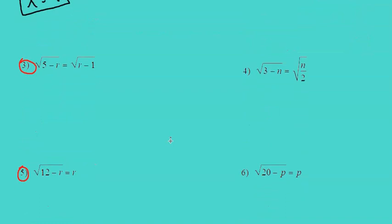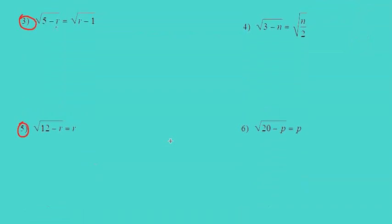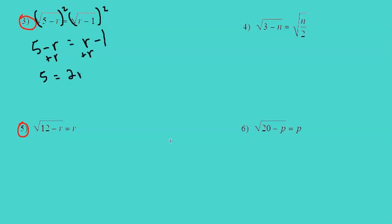Let's look at number 3. The square root of 5 minus r equals the square root of r minus 1. Exponentiate each side by 2 to get rid of those roots, and then we have 5 minus r equals r minus 1. Add r to each side, giving us 5 equals 2r minus 1. Add 1 to each side: 6 equals 2r. Divide by 2, and r equals 3.